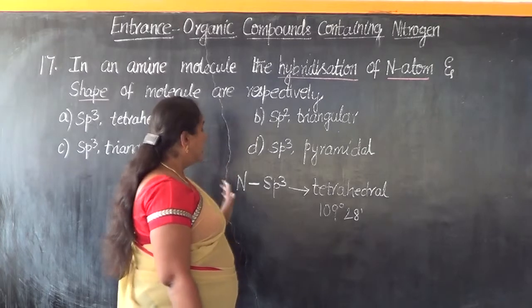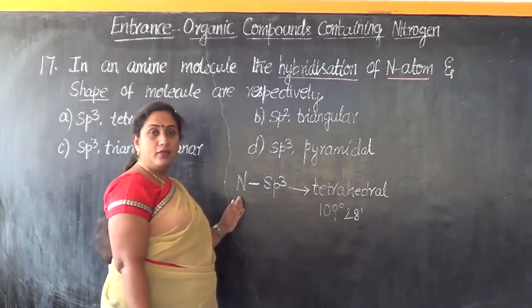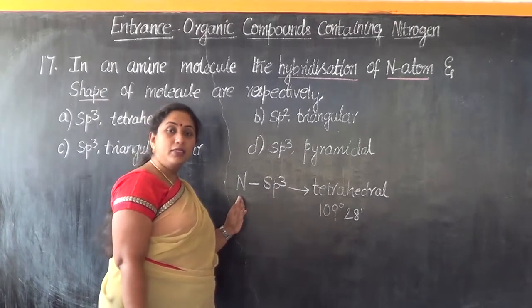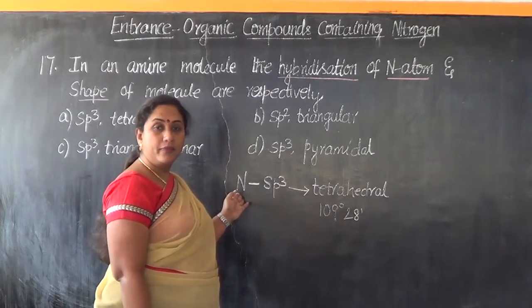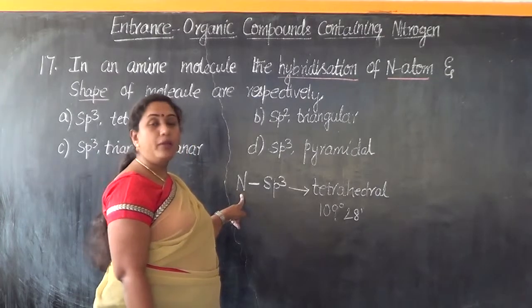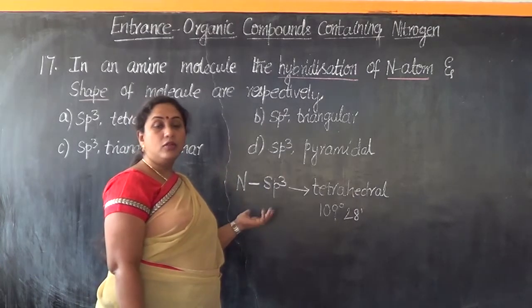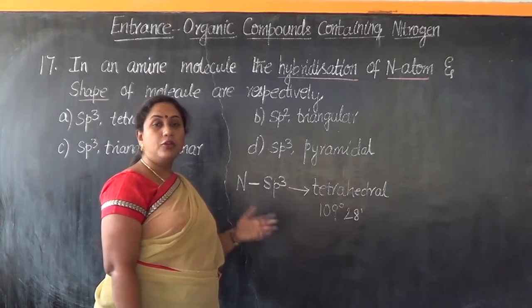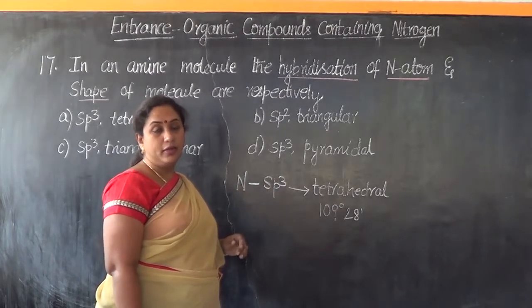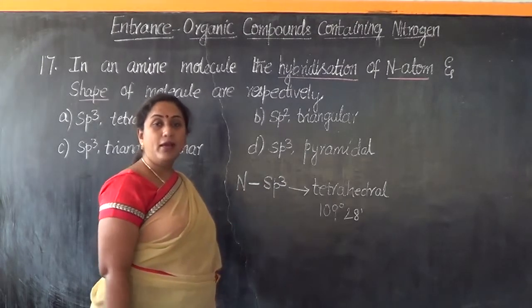Whereas in case of nitrogen, as far as amines and ammonia are concerned, because nitrogen will be having a lone pair of electrons on it, we see the concept of valence shell electron pair repulsion here. We are talking about VSEPR theory.